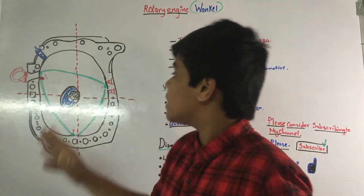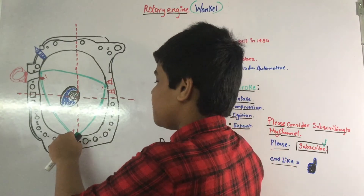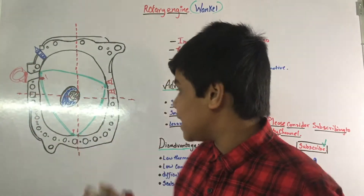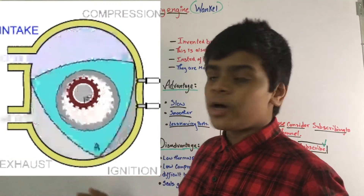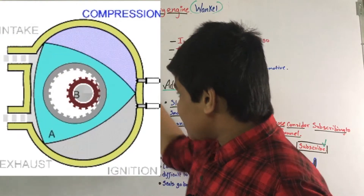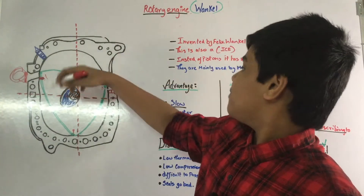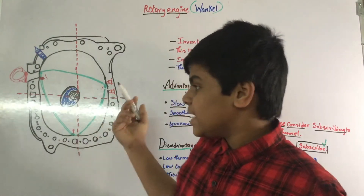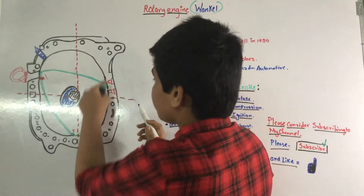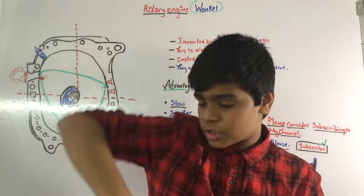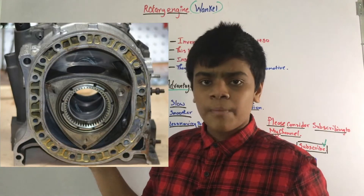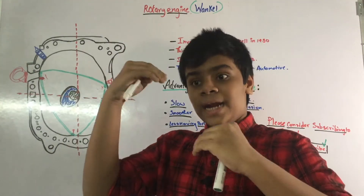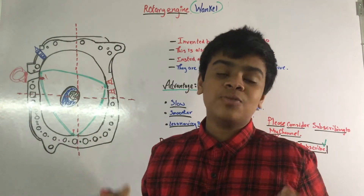After the rotor pulls in as much air-fuel mixture as possible, the port closes — no more air gets in. The next process is compression. As the triangular rotor keeps moving in one direction — clockwise — the space in that section of the housing reduces, compressing the mixture volumetrically. The oddly shaped housing causes the area to decrease as the rotor spins.